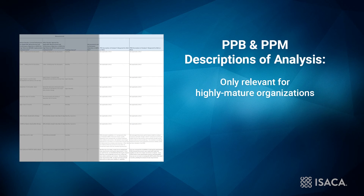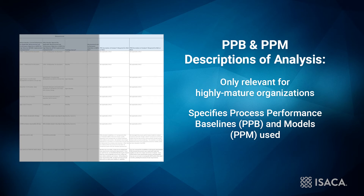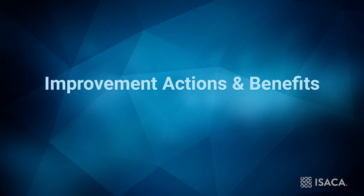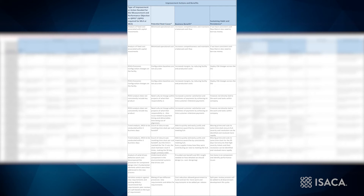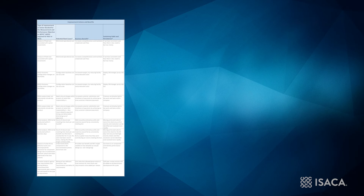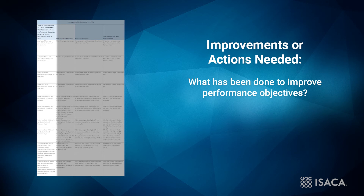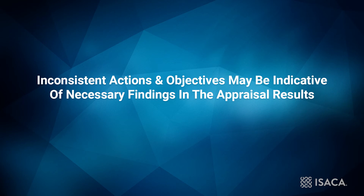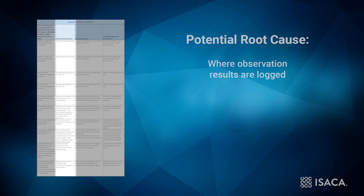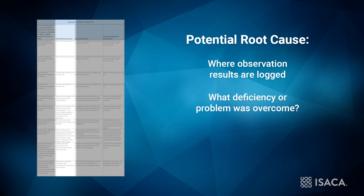The last two columns in the measurement section are required only for appraisals of highly mature organizations and are used to specify process performance baselines and models used by that organization. The third section of the report is called Improvement Actions and Benefits and shows what the organization has done to achieve results. The first column identifies actions that were implemented to improve the performance objective. Here you should check for consistency, as inconsistent actions and objectives may be indicative of necessary findings in the appraisal results. Not every improvement action needs to be listed. The second column is called potential root cause, and is where observation results are logged.